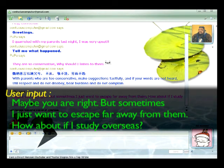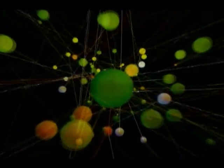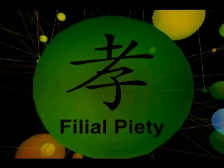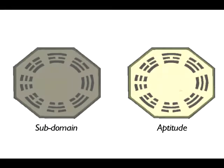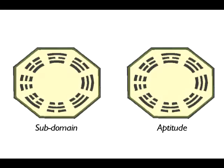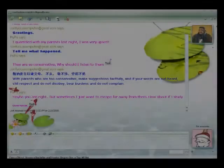Based on the question asked, virtual Confucius identifies the yu, the relevant subdomain of knowledge in the Analects. The system then further queries the user to determine his hui aptitude on that topic. According to yu and hui, virtual Confucius then replies to the user.